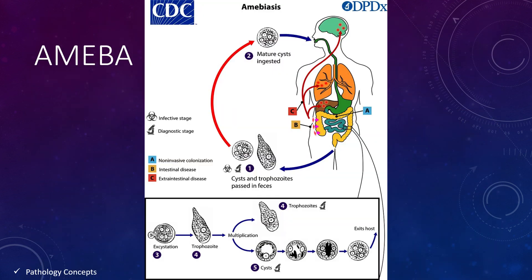Let's see the life cycle of amoeba. When mature cysts are ingested by a host, they reach the small intestine. In the intestine, excystation occurs. After excystation, trophozoite formation occurs and trophozoites multiply, forming more trophozoites and cysts. These cysts exit the host and contaminate the environment. This contaminated food and water is ingested by another host, and thus the cycle is completed.